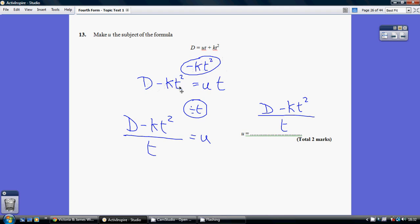So we get d minus kt squared equals ut. We're nearly there, just one adjustment. We need to undo this multiplying by t by dividing by t. So we get u equals d minus kt squared all over t.